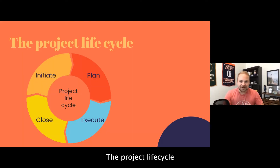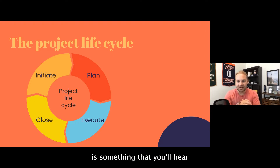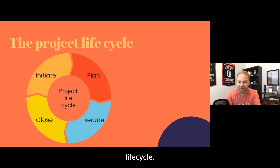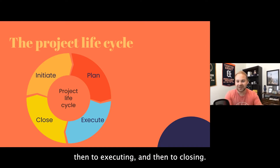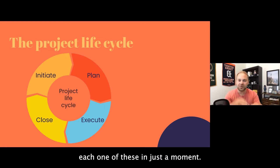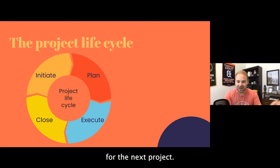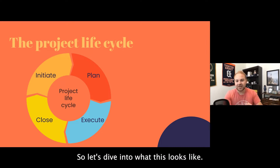The project life cycle is something you'll hear anytime you're involved with project management. There are four phases: initiating, planning, executing, and closing. It is a cycle because as you close one project, you should be receiving feedback and evaluating to make changes for the next project.